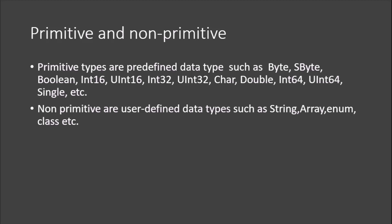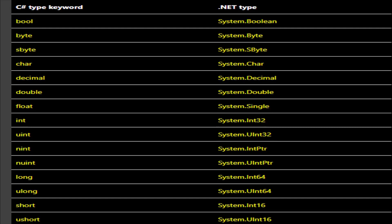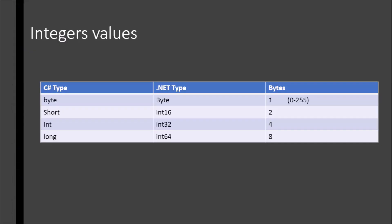In data types, we have two types: primitive data types and non-primitive types. Primitive types are predefined data types — we have byte, boolean, int, double. Non-primitive types are user-defined data types such as string, array, and class. For C# and the .NET type system, when you compile — for example 'bool' in C# — it converts to the .NET type Boolean.